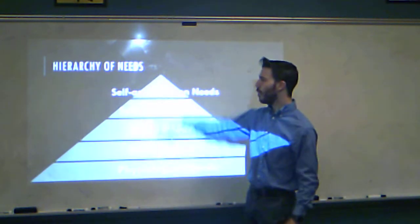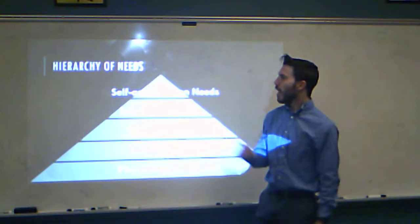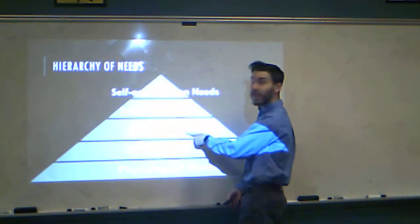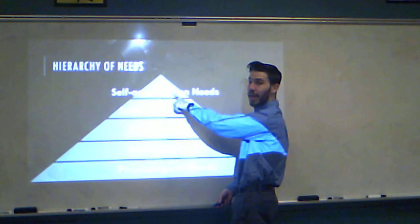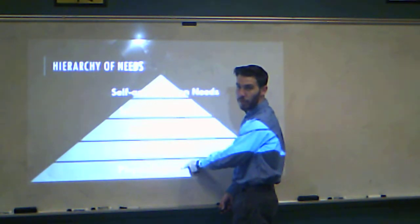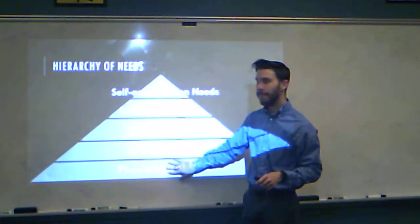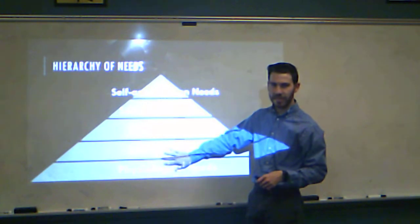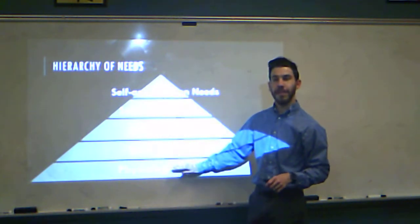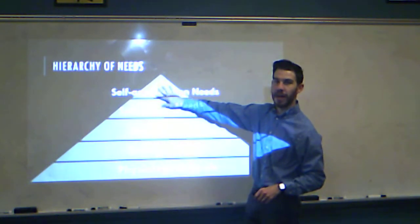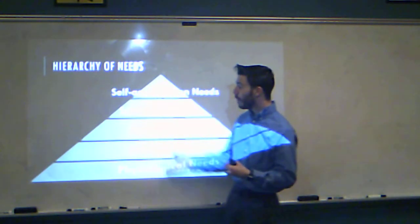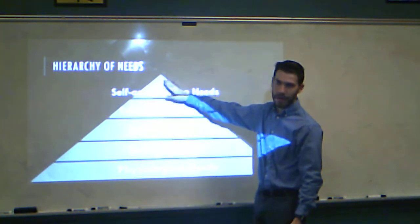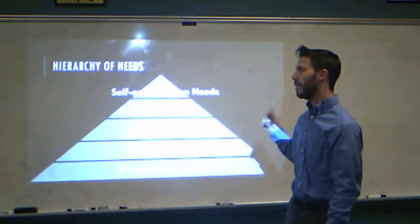And then we always know those people who live up at the top the whole time. What this theory states is: before you can get someone to buy a brand new iPhone, make sure they actually have another phone. Because if they don't have basic needs met, they're not going to be able to or want to buy higher-level items. They should have the basic needs met before they can get up here. And that's what the hierarchy of needs is.